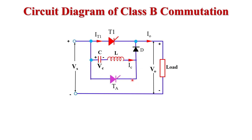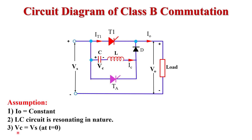Before explaining the working of Class B commutation, we make some assumptions. First, load current is constant. Second, the LC circuit is resonant in nature. Third, we assume that initially the capacitor is charged with VS voltage.